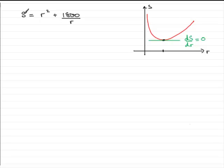So we need to get ready to differentiate this. Well first of all this term needs to be changed. We need to change this to S equals r squared. The first term is OK. But this one is the same as 1800 times 1 over r. And 1 over r is written as r to the power minus 1.